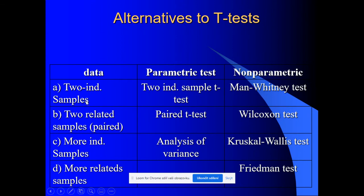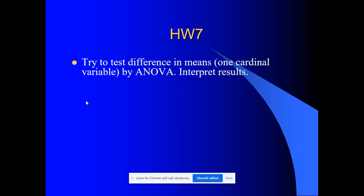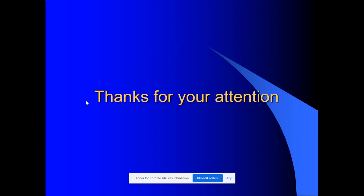That's brief information about non-parametric tests. For your next homework, take one cardinal variable (or ordinal with a longer scale) and one nominal or ordinal variable with more than two categories (at least three). Perform analysis of variance — merging categories if necessary, using alternative robust tests such as Welch or Brown-Forsythe if needed, applying multiple comparisons, and interpreting results about differences. Optionally, you can also apply the Kruskal-Wallis test as a non-parametric alternative. Thank you for your attention — this is the end of the lecture on analysis of variance.